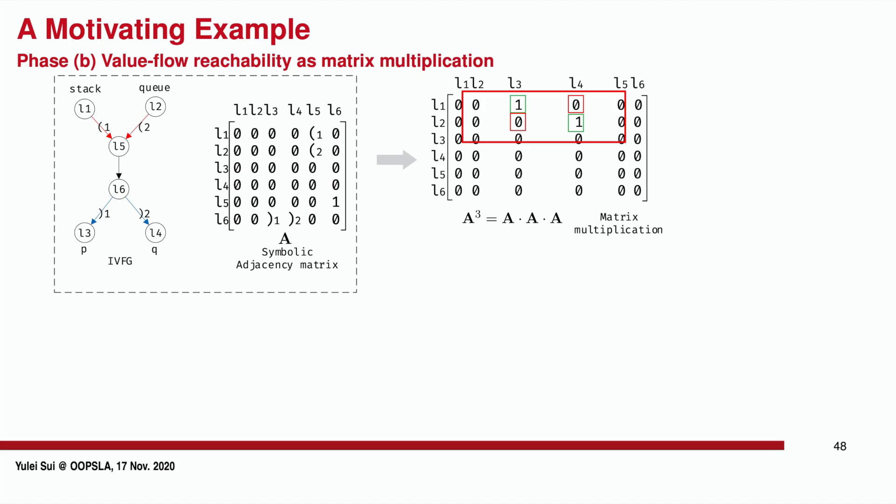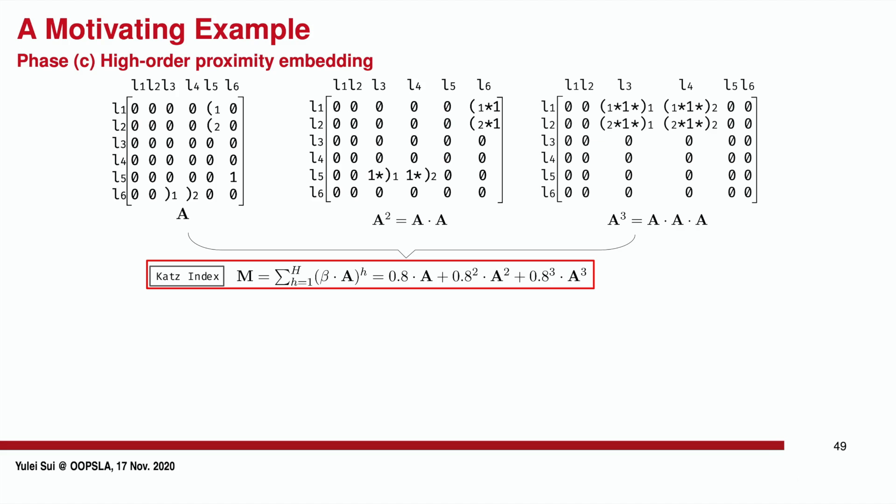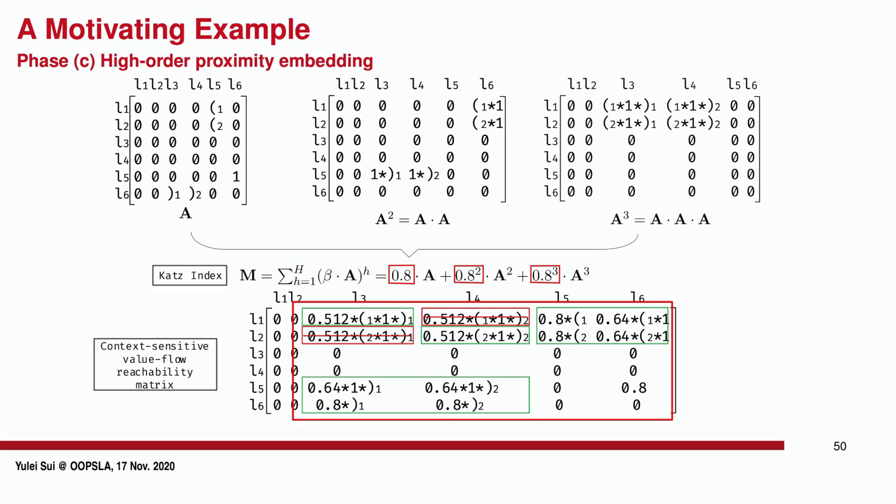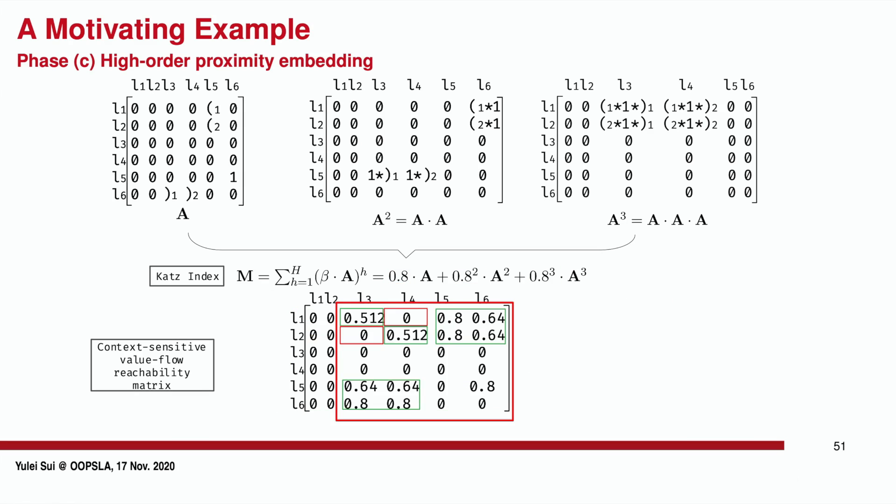Next, we use Katz index to approximate the graph's high-order proximity matrix M, which is essentially the ensemble of all feasible value flow paths. H is 3, representing the longest path length in this example. Beta is 0.8, representing the decay parameter. After resolving the symbolic matrices using CFL reachability analysis, we calculate the Katz index matrix M following this equation. For example, M 1,3 here shows the proximity value of all paths from L1 to L3.